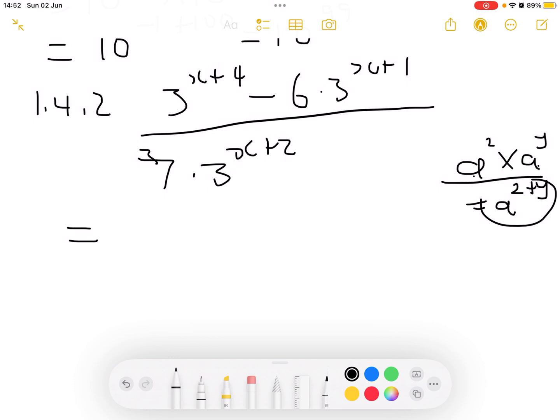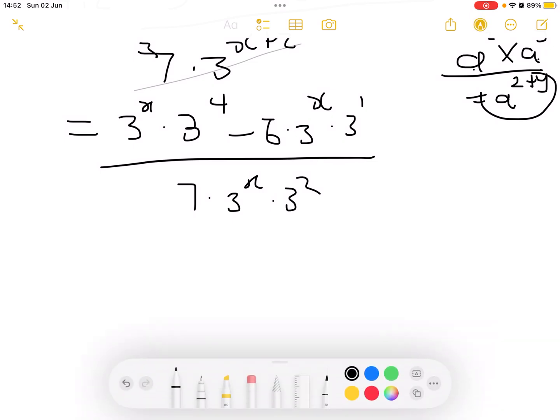This becomes 3 to the power of x times 3 to the power of 4 minus 6 times 3 to the power of x times 3 to the power of 1, all over 7 times 3 to the power of x times 3 to the power of 2. Now we see there is something common here, which is 3 to the power of x, which we can factor out. If we factor out 3 to the power of x, we are left with 3 to the power of 4 times 1, which will just be 3 to the power of 4.